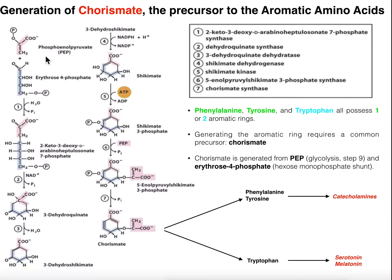These two molecules are going to be condensed by an enzyme with a tongue-twister name: 2-keto-3-deoxy-arabino-hepiolucinate-7-phosphate synthase. What this enzyme is going to do is condense these two molecules with the loss of phosphate into a molecule aptly named 2-keto-3-deoxy-arabino-hepiolucinate-7-phosphate. So obviously this is a linear chain right here.